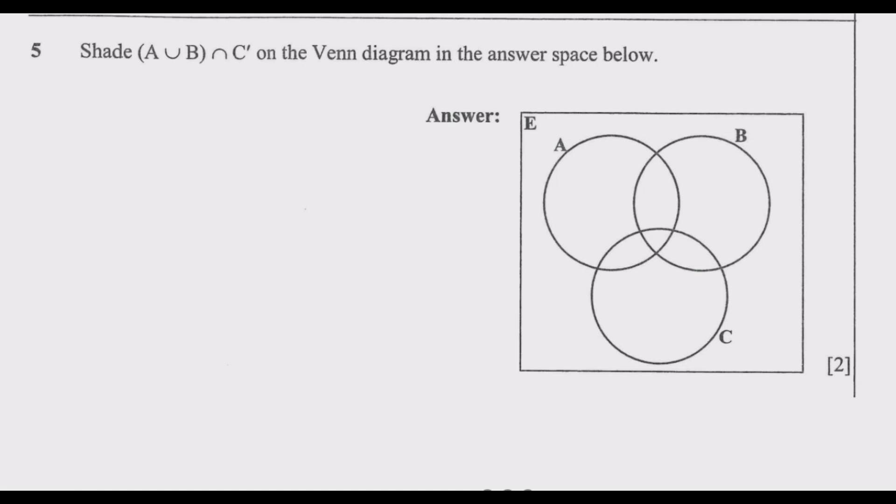Let us look at question 5. Shade (A ∪ B) ∩ C' on the Venn diagram in the answer space below. What does this mean? There are two ways you can answer this question. I'm going to explain the two approaches, you still get it correct either way. Remember, the principle is for you to understand, not memorize. What we have is (A ∪ B) ∩ C'. What this tells us is you need to first find A ∪ B, then subtract C.